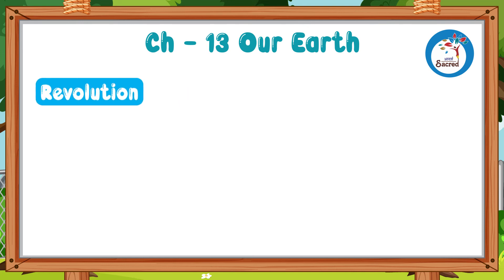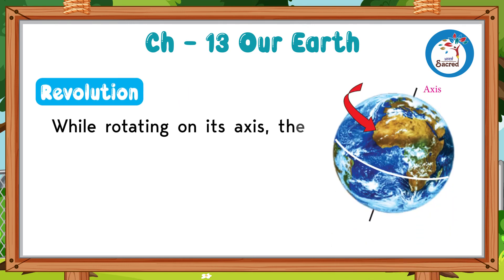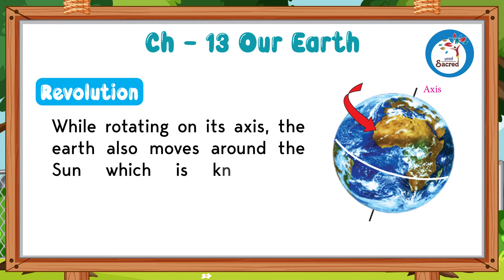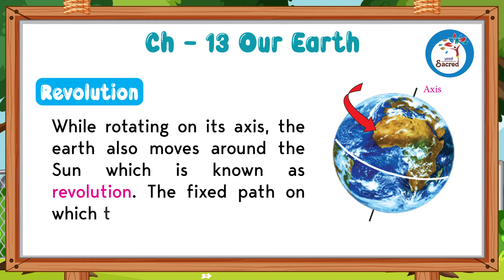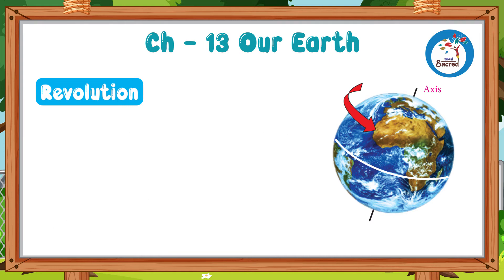Revolution. While rotating on its axis, the Earth also moves around the Sun, which is known as revolution. The fixed path on which the planets move around the Sun is called an orbit. The shape of the orbit is oval.